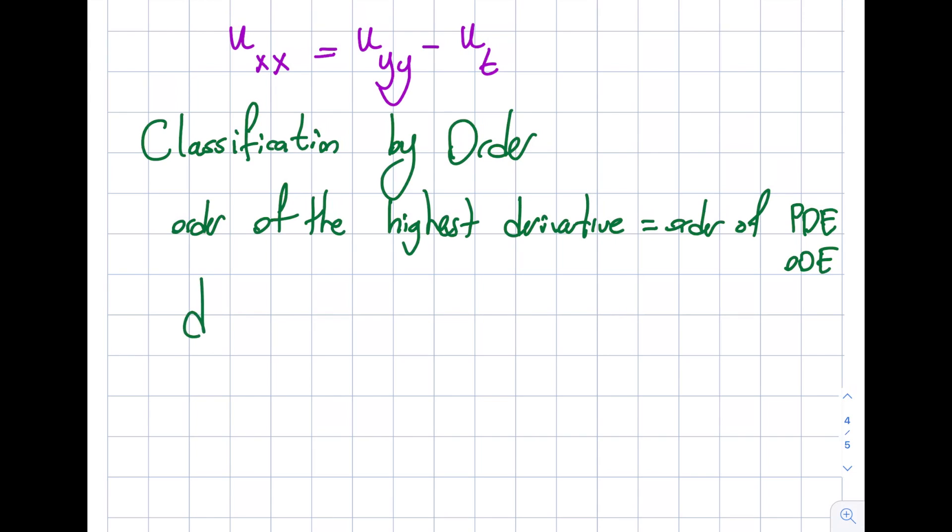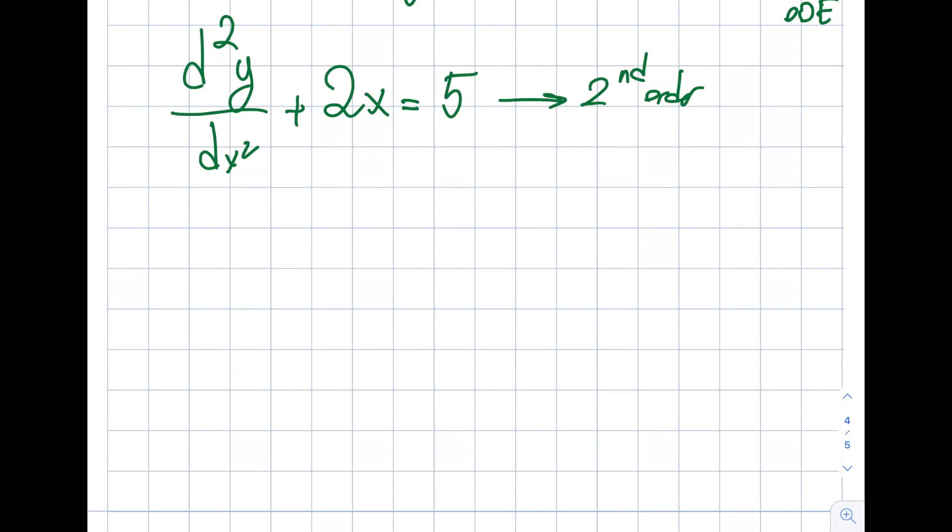Let me give you a straightforward question: t²y'' + 2x = 5. What is the order of this? I'm hearing what you're saying - it's second order, right? That's doable. Now let me try this one.